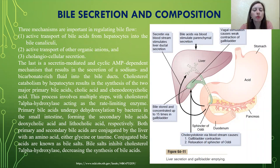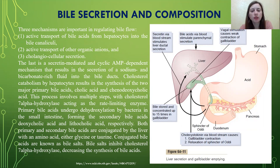Three mechanisms are important in regulating bile flow. First, active transport of bile acids from hepatocytes into the bile canaliculi. Second, active transport of other organic anions and cholangiocytes. Third, cholangiocyte secretion, which is a secretin-mediated and cyclic AMP-dependent mechanism that results in the secretion of sodium- and bicarbonate-rich fluid into the bile ducts.